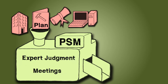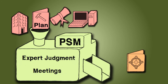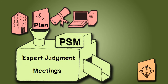The main output of the plan scope management process is the scope management plan, which will be used by the project manager in the project management plan to define the work that needs to be done and the final deliverable of the project.